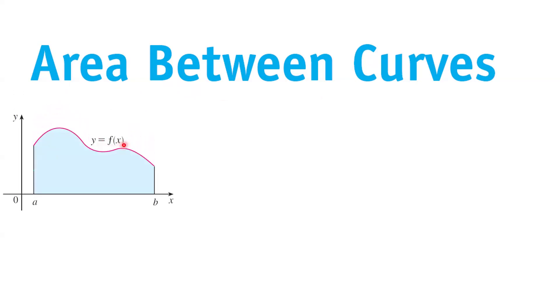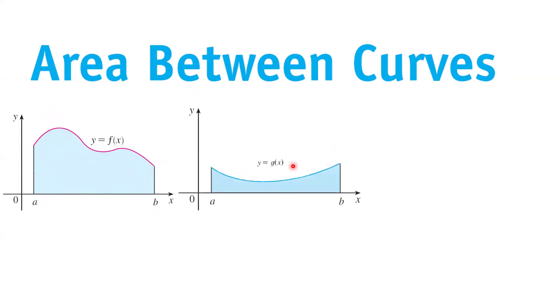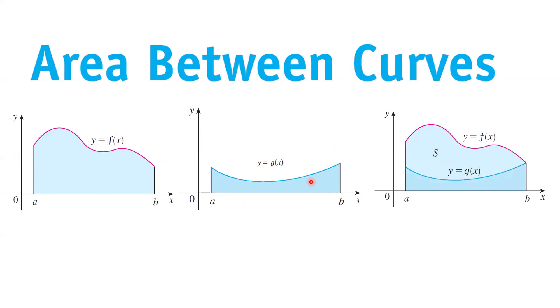Our goal is to find the area between two curves. Suppose you have a function y equals f of x, and the area bounded between f of x and the positive part of the x-axis between a and b is located here. Now assume you have another function g of x. The area bounded between g of x and the positive part of the x-axis between a and b is located here. Now the question is, how do you find the area bounded between these two functions? On top, the function is f of x, and down here you have function g of x.